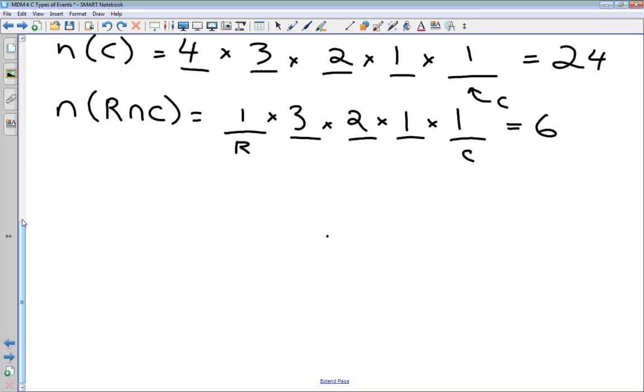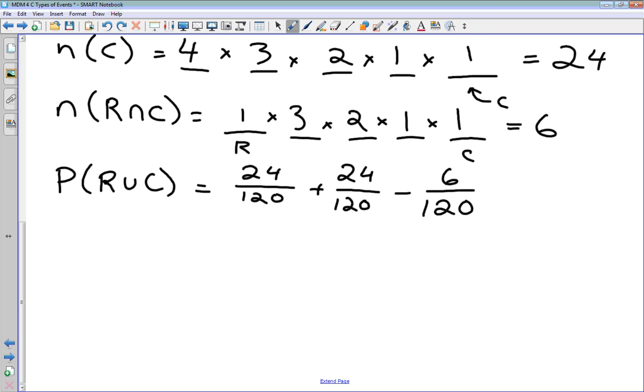So, we can put all of these things together now to calculate our probability. So, our probability of R union C is going to be, we've got 24 divided by 120 for the probability that Rory is on the left. Plus 24 divided by 120 for the probability that Charlie is on the right. And we minus 6 over 120 for taking off those cases where Rory is on the left and Charlie is on the right so we don't count them twice in our counting. We do this addition here and we get, let's see, 48 minus 6 is going to be 42 over 120.